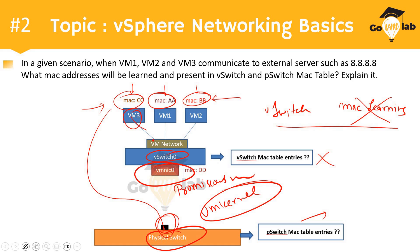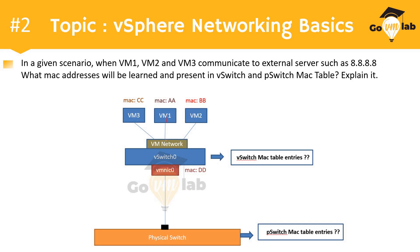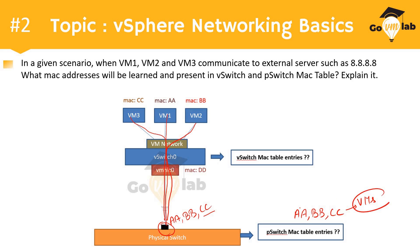Because this adapter is configured in promiscuous mode, all packets pass through. When VM1 sends a packet, it goes to VMNIC0 and is forwarded to the physical switch, which learns MAC address AA on that port. When VM2 generates a packet and hits the switch port, the switch learns BB. When VM3 sends a packet through VMNIC0, the switch learns CC. So your physical switch is going to learn MAC addresses AA, BB, and CC, which belong to your virtual machines.